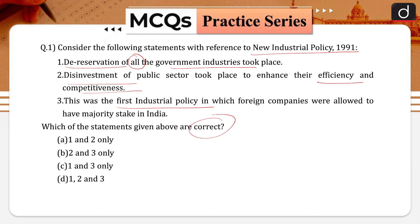The correct answer is option B, that is two and three only. The first statement is wrong. The long-awaited liberalized industrial policy was announced by the government of India in the year 1991 in the midst of severe economic instability.